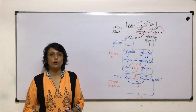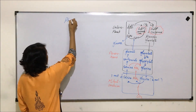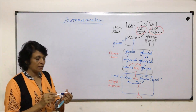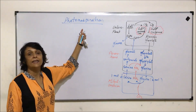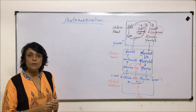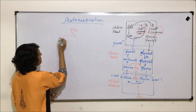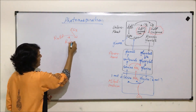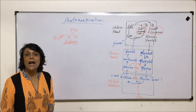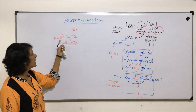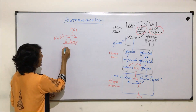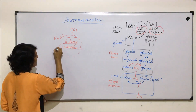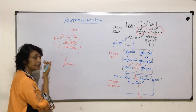Let us talk about another very important process called photorespiration. We will understand this process in detail, but before that we need to know why and how this process takes place. In normal case, carbon dioxide is accepted by RuBP and the enzyme which helps is Rubisco. Rubisco here acts as carboxylase because it is helping in addition of carbon dioxide to RuBP, and if it acts as carboxylase, we have seen the entire process where glucose synthesis takes place.